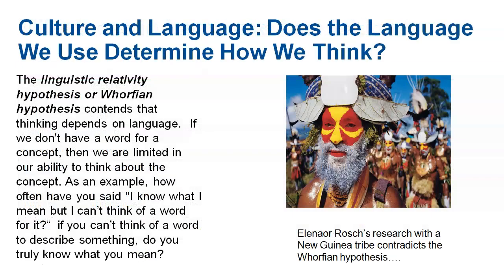Then we have the linguistic relativity hypothesis, also known as the Whorfian hypothesis. This is essentially the idea that if you don't have a word for something, you can't think about that thing — language is very deeply tied to thinking. Some of this had to do with case studies of people who were never taught to speak, or not taught very well, and after being taught more language, they couldn't recall anything from the time before they could speak. Before you know the word 'happy,' you can't really think about happiness because there's no word for it.